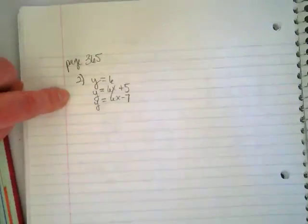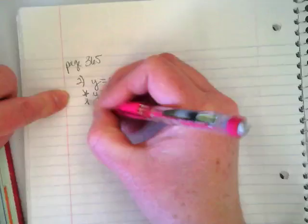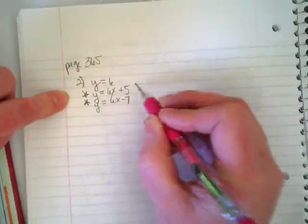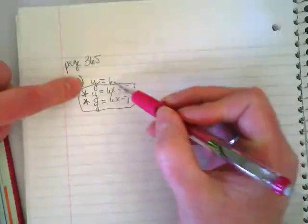When I'm writing these problems down from the book, I list them like this. Because I've told you over and over, this makes it immediately clear which ones are parallel, because the slopes are lined up.